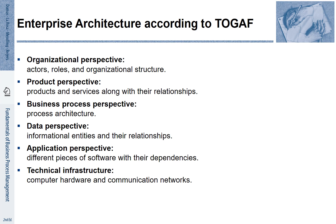There is the organizational perspective, which relates to actors' roles in organizational structure. The product perspective distinguishes products and services and how they are related. TOGAF also emphasizes the business process perspective and the corresponding process architecture. The data perspective highlights informational entities and their relationships. The application perspective focuses on different pieces of software and their dependencies. And finally, there is the technical infrastructure relating to computer hardware and communication networks. All these different perspectives provide essential pieces of infrastructure for a company.